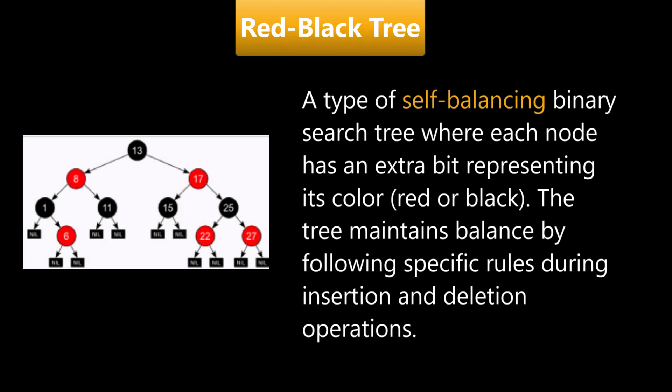Red and black trees are a type of self-balancing binary tree where each node has an extra bit representing its color, red or black. The tree maintains balance by following specific rules during insertion and deletion operations.